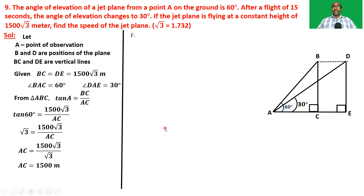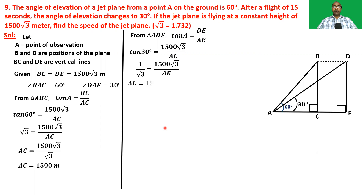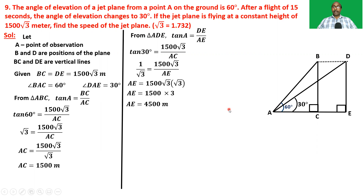Now from triangle ADE, tan A equals DE by AE, that is tan 30° equals 1500√3 by AE. After simplifying, AE equals 1500 × 3, that is 4500 meters. So AC is 1500 meters and AE is 4500 meters.